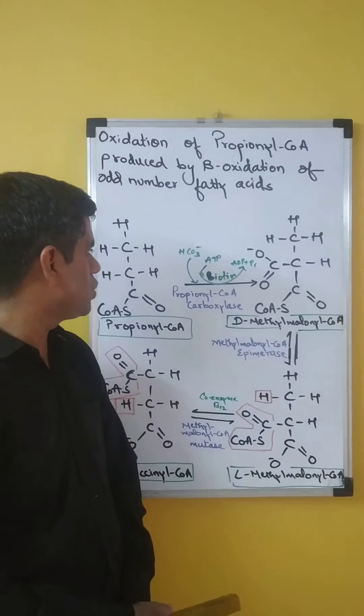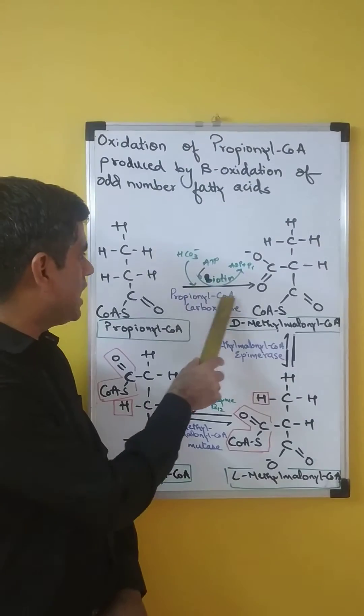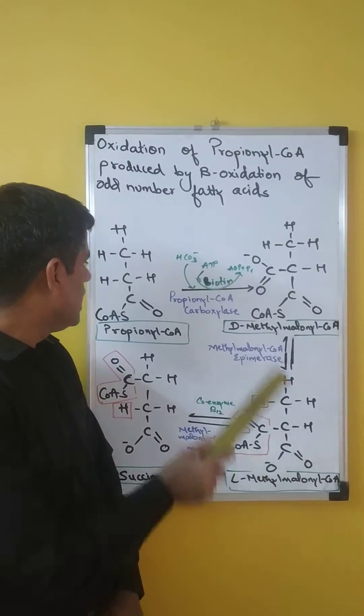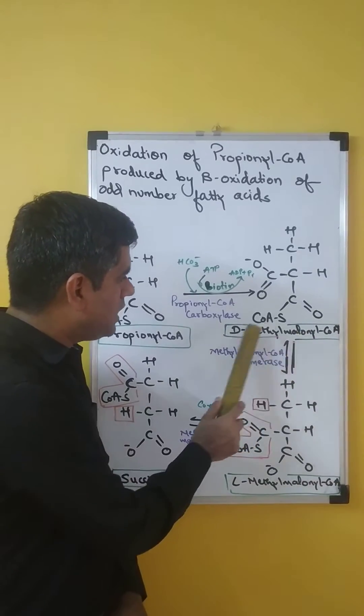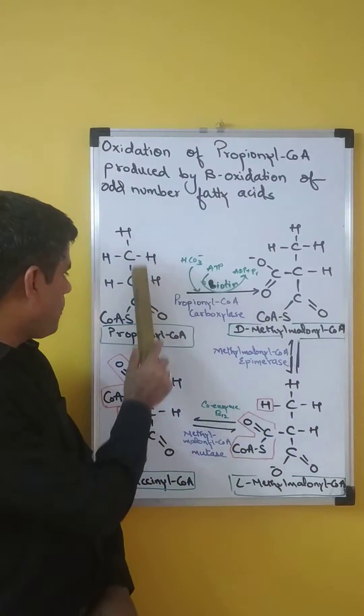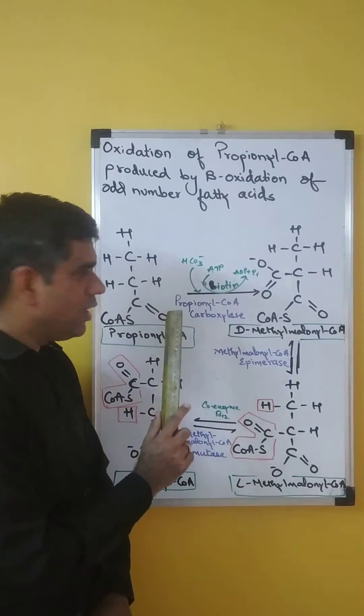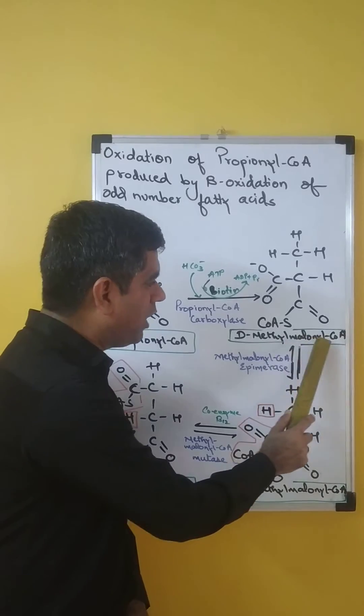This requires an expenditure of energy which is provided by hydrolysis of ATP. ATP is hydrolyzed to form ADP and Pi, carbon dioxide is transferred to propionyl-CoA, and there is formation of D-methylmalonyl-CoA. So we complete the first step. Propionyl-CoA is carboxylated by propionyl-CoA carboxylase to form D-methylmalonyl-CoA.